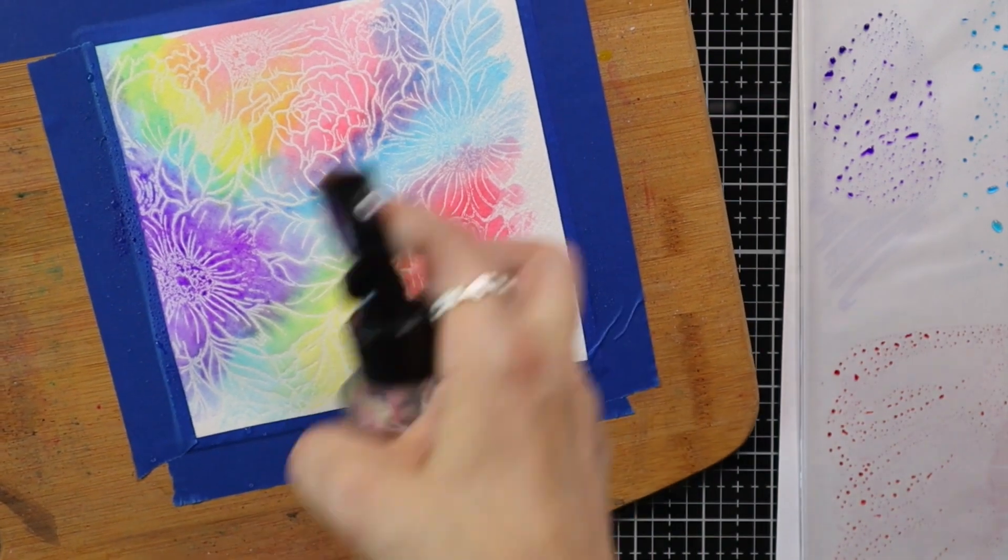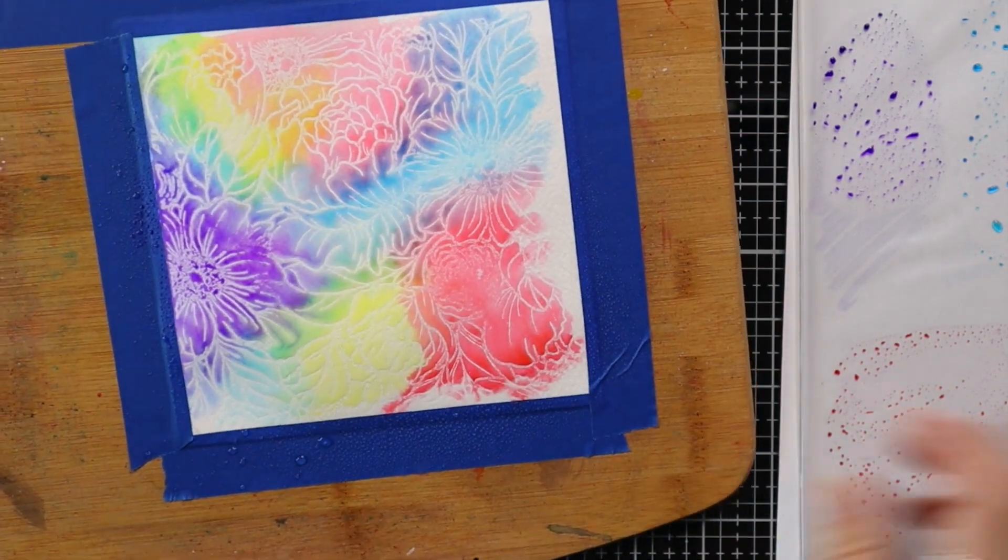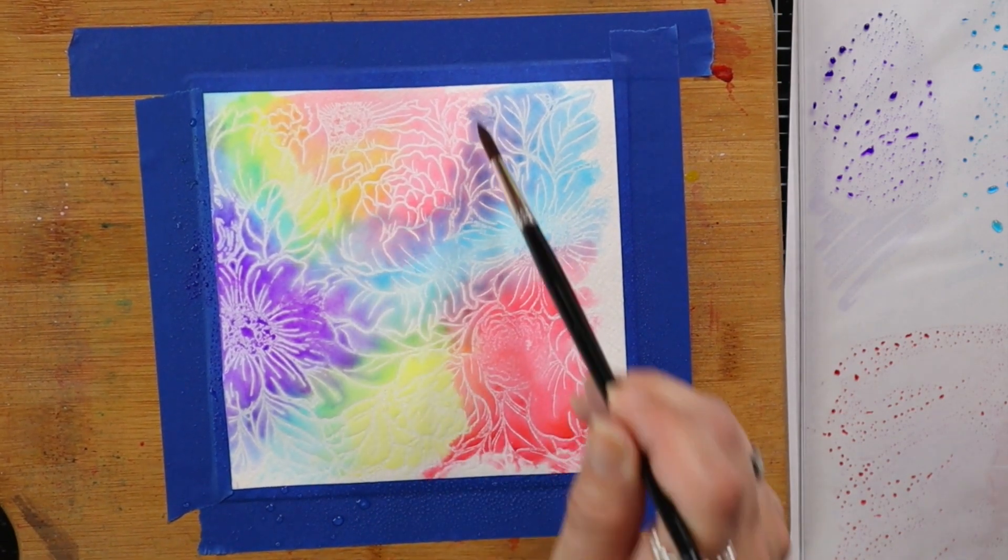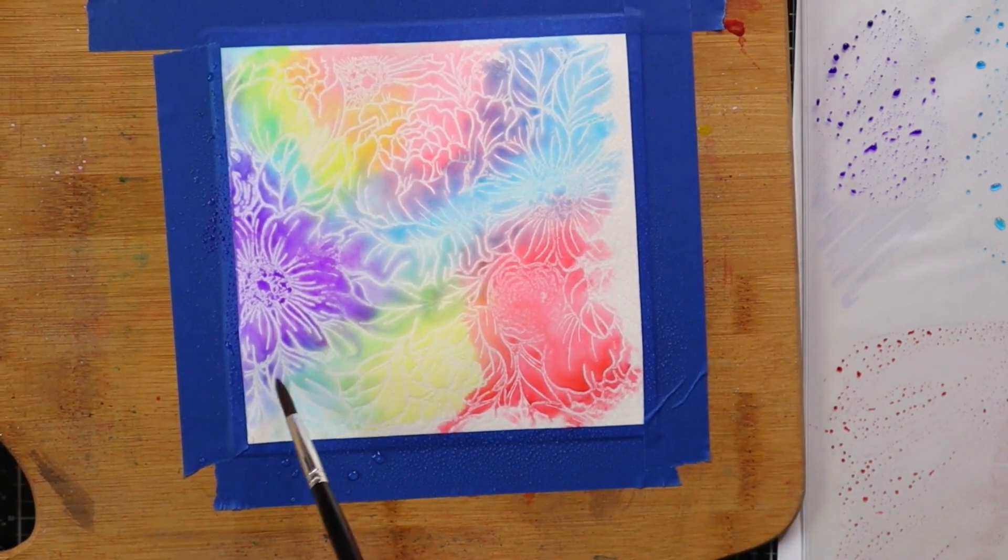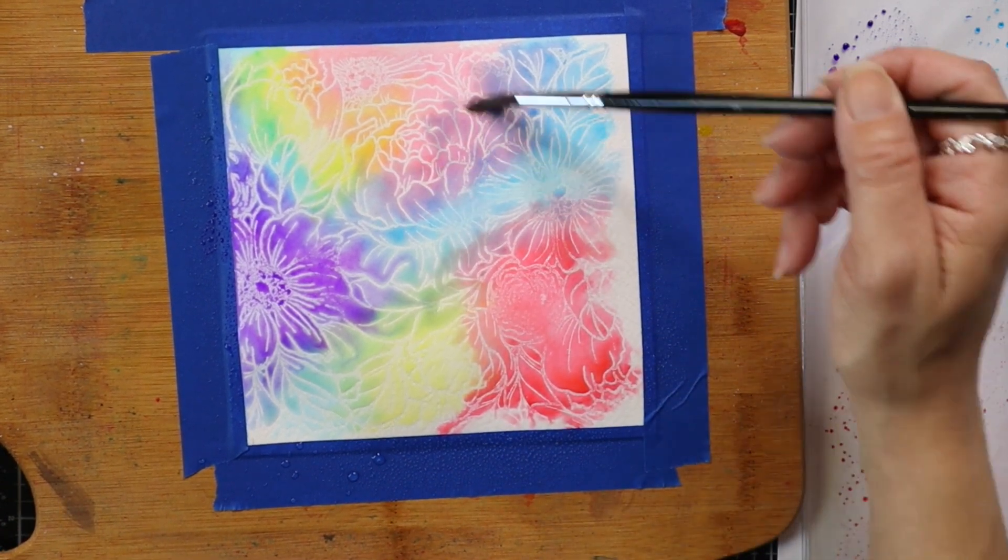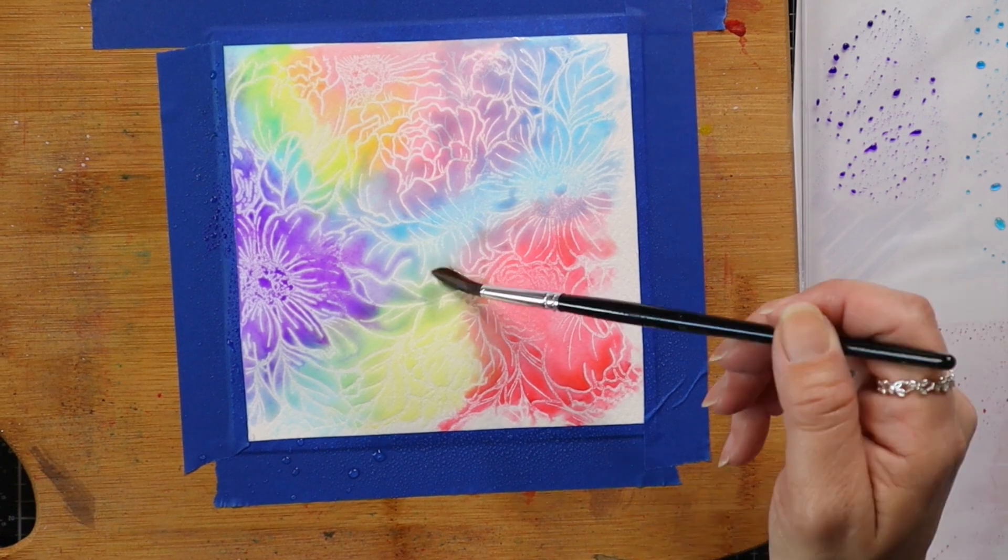So after I have kind of that background scribbled on I'm spritzing this heavily with water kind of moving that a little bit to help the colors blend and then I'm going to set this off on the side to dry for a little while. It really is best if you can let it air dry but I do speed up the process just a little bit.